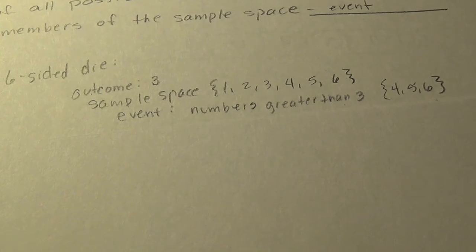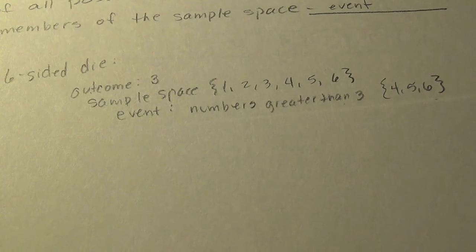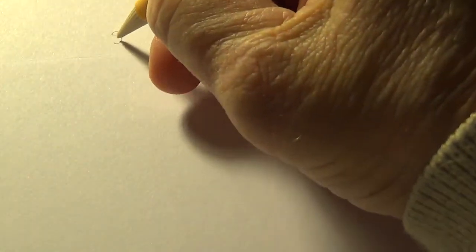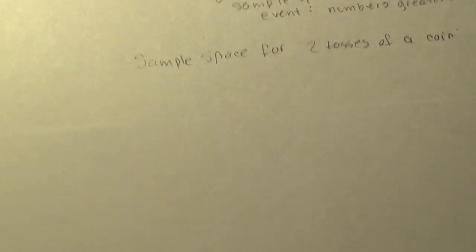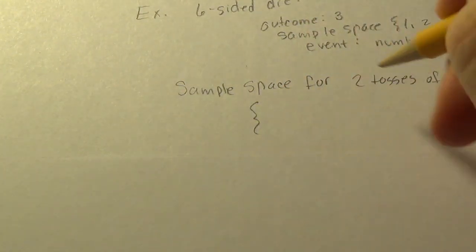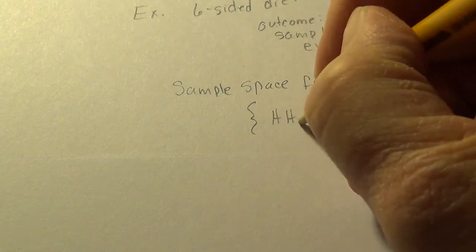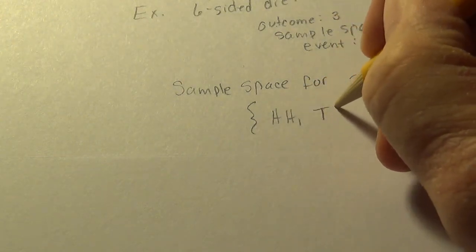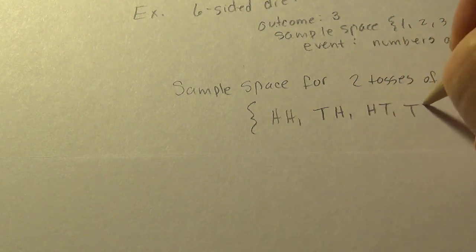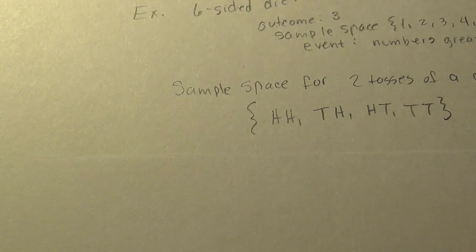What about flipping a coin twice? Let's find the sample space for two tosses of a coin. The sample space is the set of all possible outcomes written in braces: you could get heads-heads, heads-tails, tails-heads, or tails-tails. There's the sample space for tossing a coin twice.